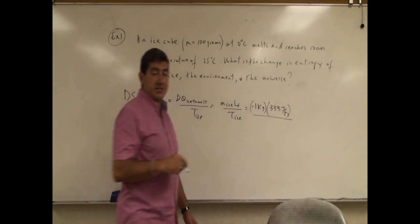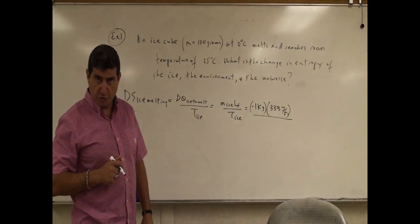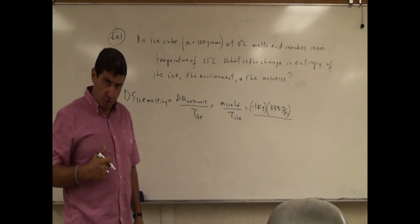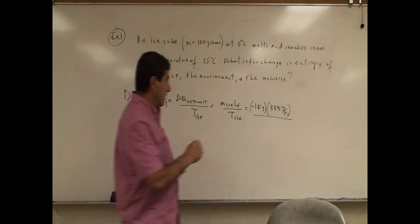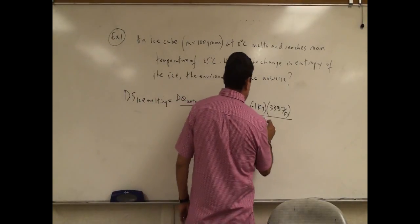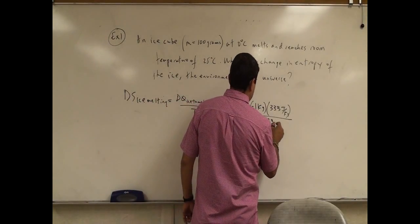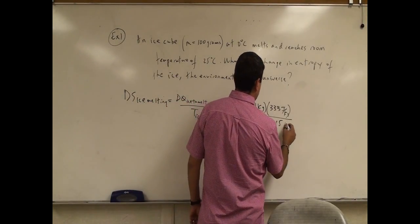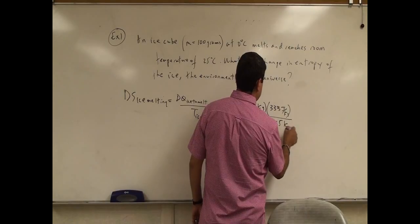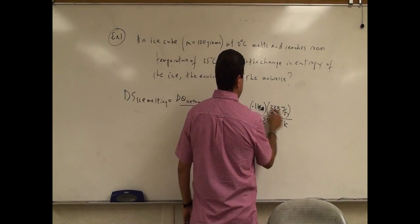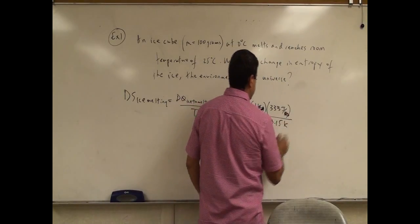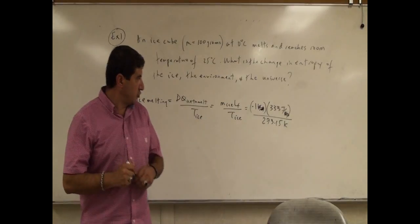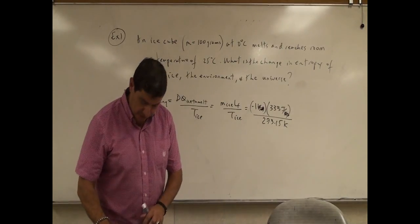The temperature of the ice, since it's at zero degrees Celsius, we have to convert that to Kelvin: 273.15 Kelvin. The kilograms cancel, and then the answer is going to be joules per Kelvin.